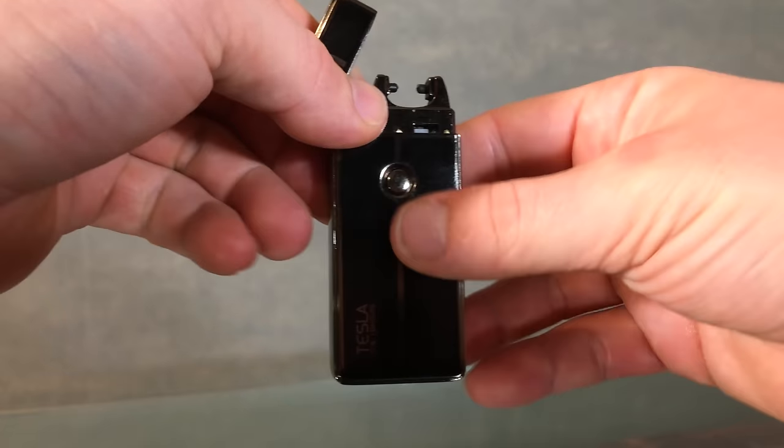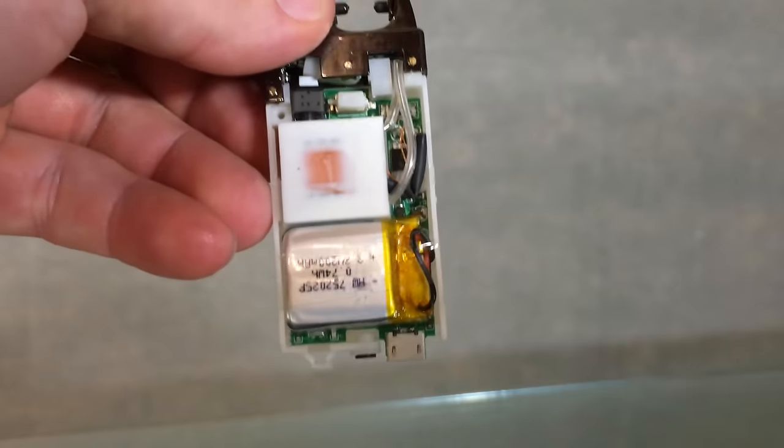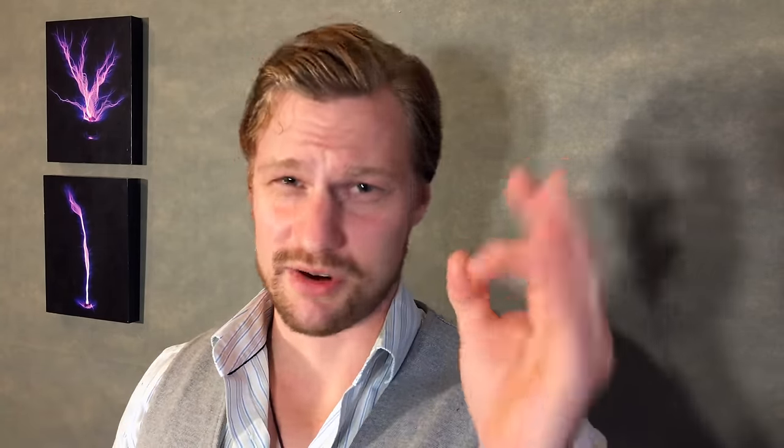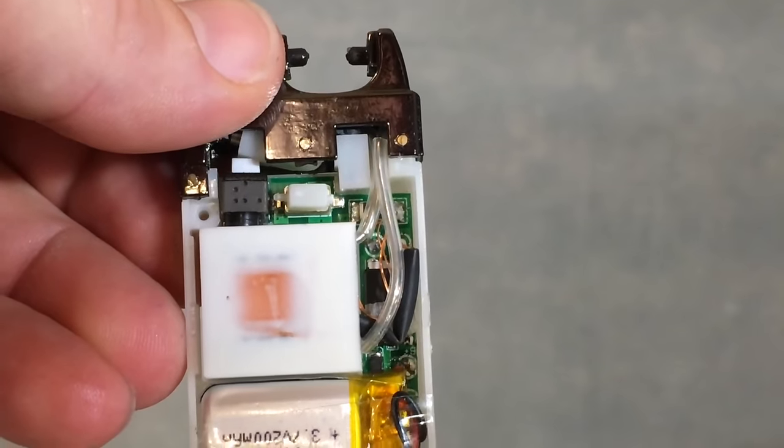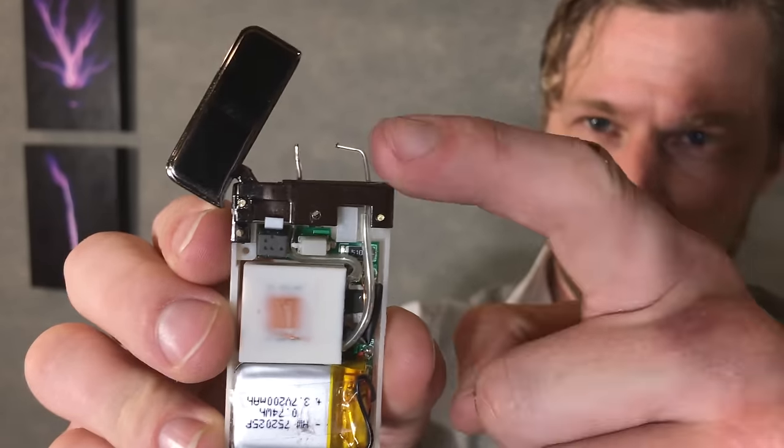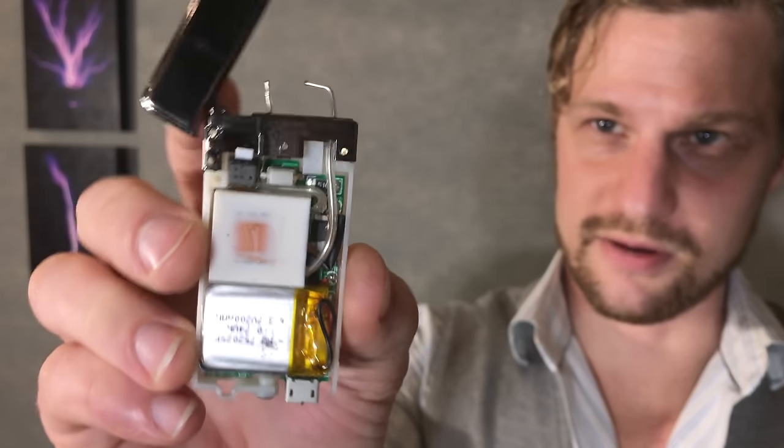So first you'll want to carefully remove the lighter's housing and find the two high voltage wires which provide the arc. Different models of lighters are built with different internals, but locating the high voltage wires is usually pretty straightforward. That's because they have a very thick insulation. Next, cut away the top of the lighter and free the ends of the wire from the ceramic holder like so.